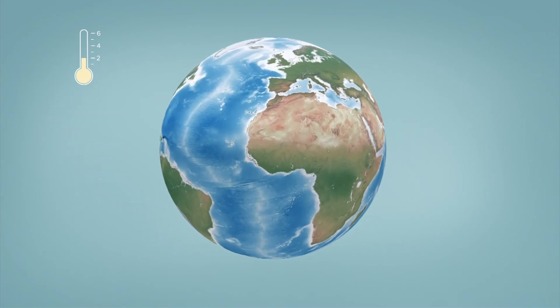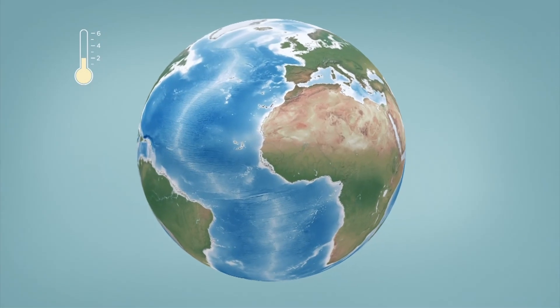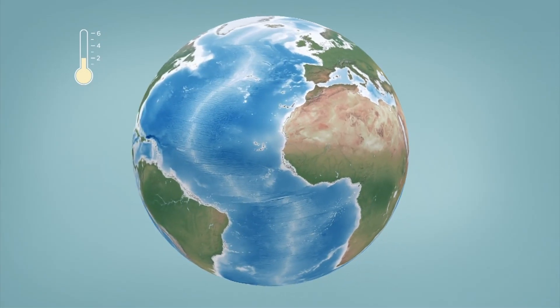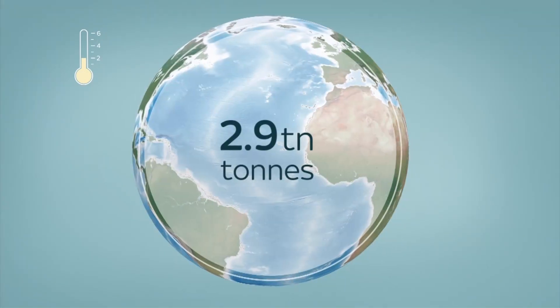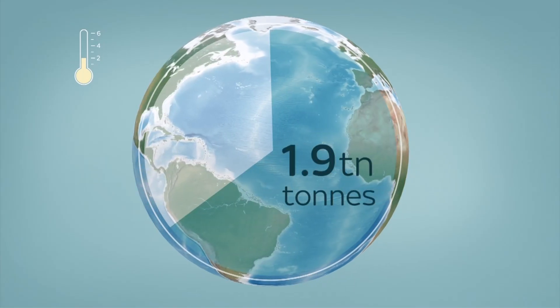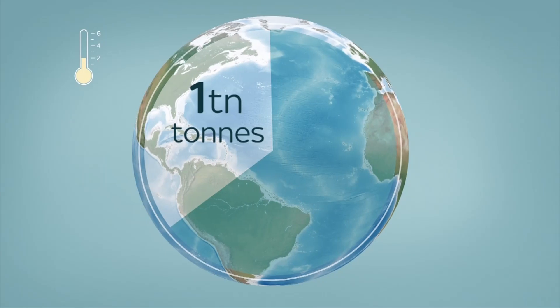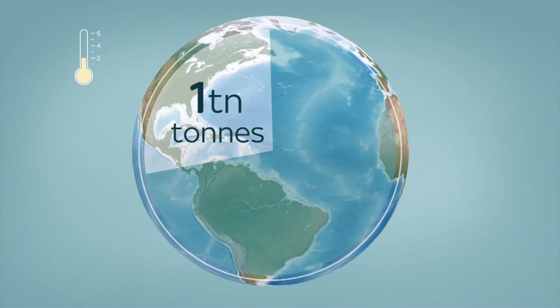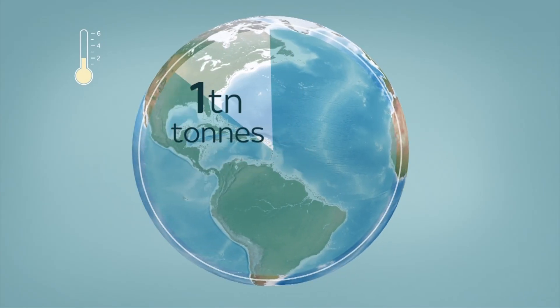Scientists say we can still avoid a two-degree rise if we limit our carbon emissions to no more than 2.9 trillion tonnes. We've already used 1.9 trillion tonnes, we have 1 trillion left to use between now and forever. At the current rate, we'll use it in just 21 years.